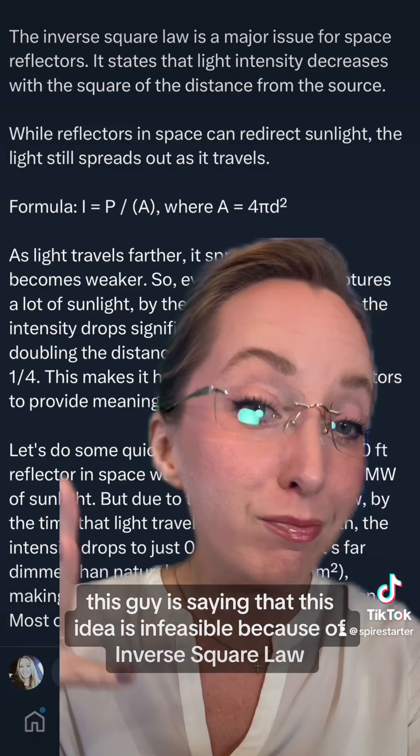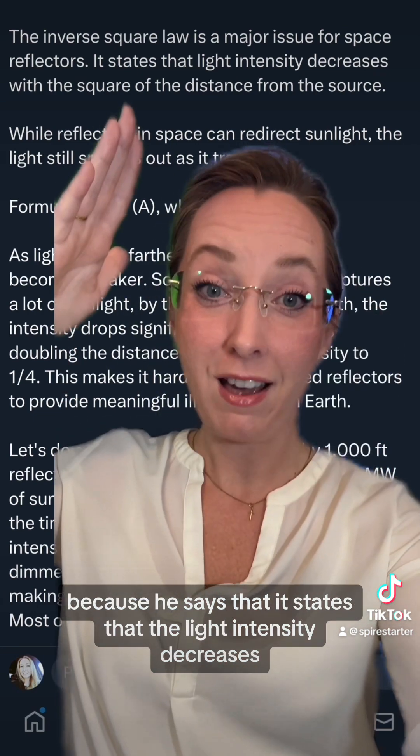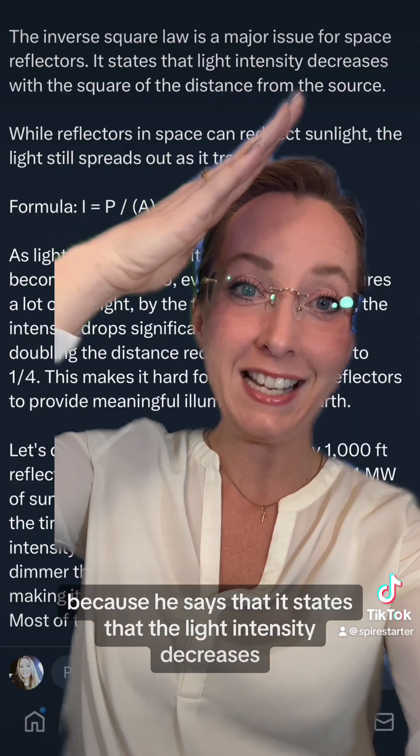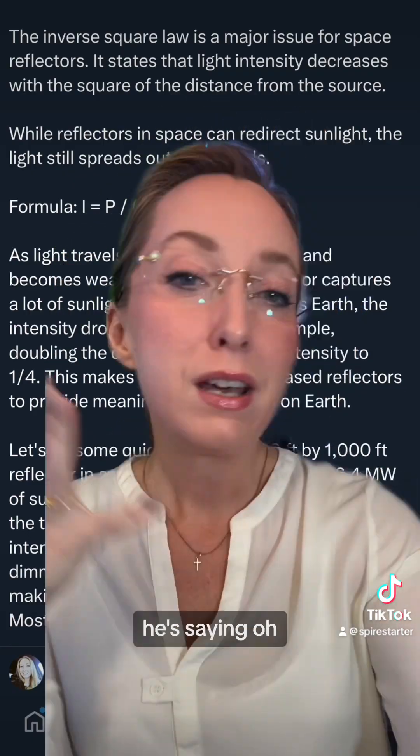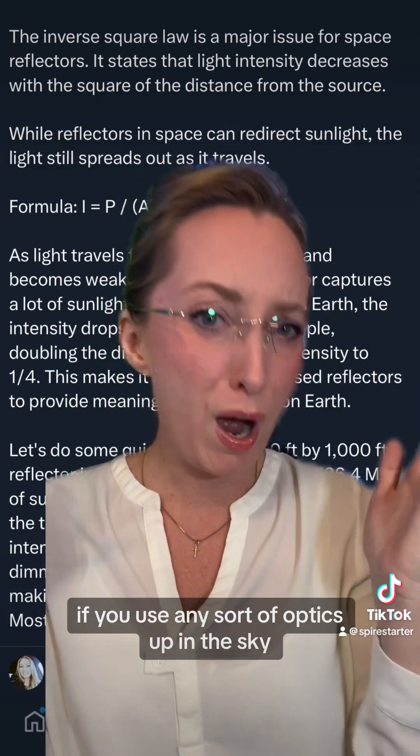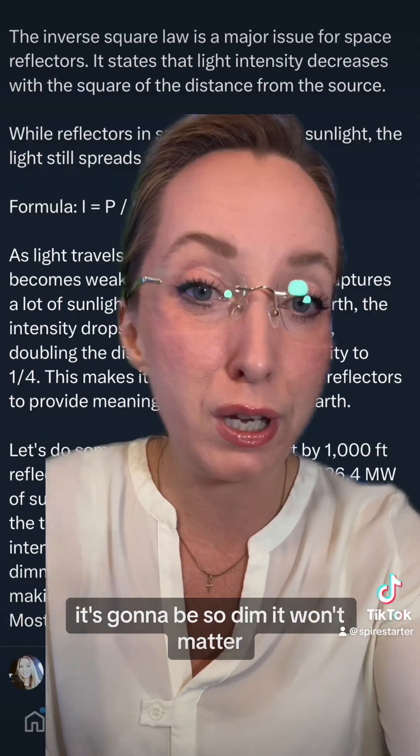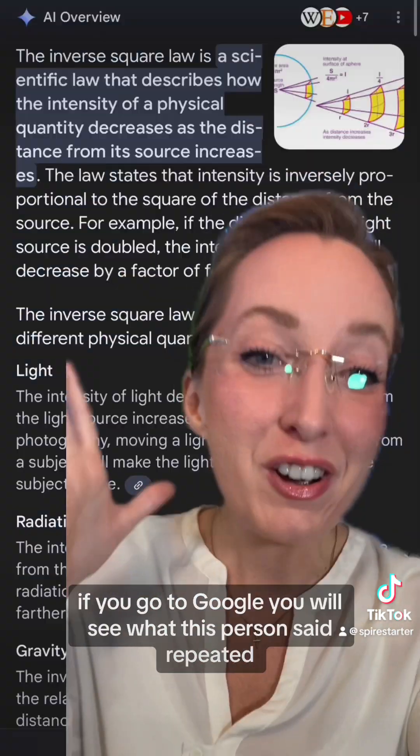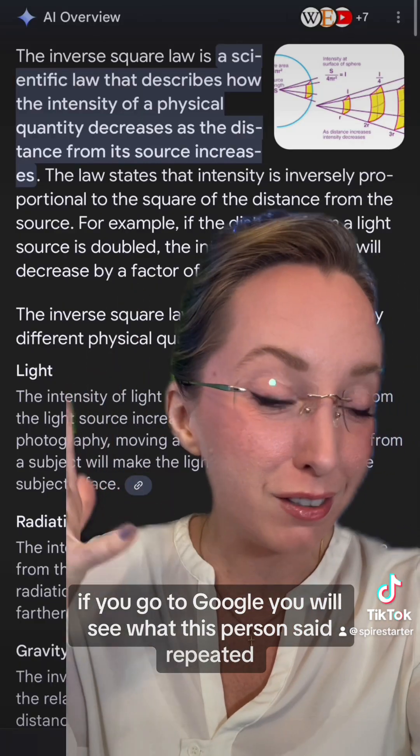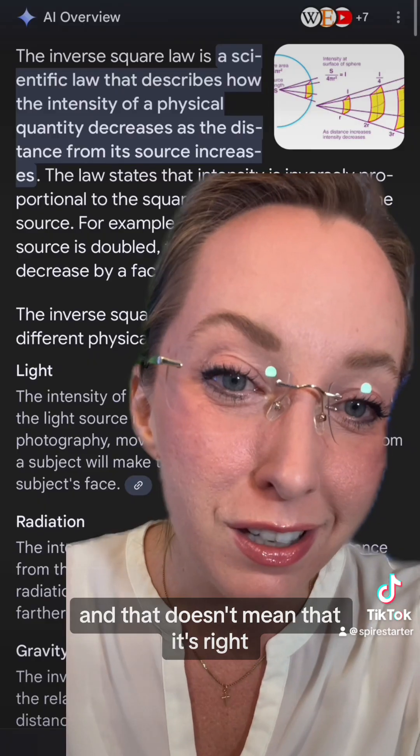This guy is saying that this idea is infeasible because of inverse square law because he says that it states that the light intensity decreases with the square of the distance from the source. He's saying if you use any sort of optics up in the sky, by the time it gets to the earth it's gonna be so dim it won't matter. But this is an incorrect interpretation of the inverse square law. If you go to Google you'll see what this person said repeated, and that doesn't mean that it's right.